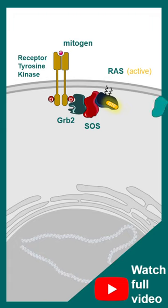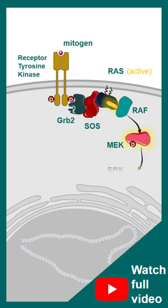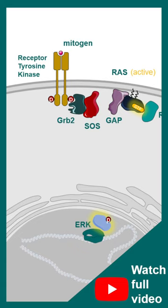Further, it activates kinases like RAF, and in downstream MEK/ERK gets activated. Phosphorylated ERK moves to the nucleus, where it can interact with transcription factors and RNA polymerase to activate gene expression, which leads to growth, survival, and proliferation.